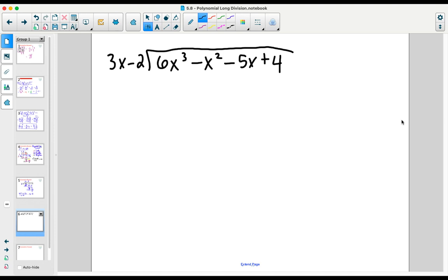Here we have 6x³ - x² - 5x + 4, all divided by 3x - 2.